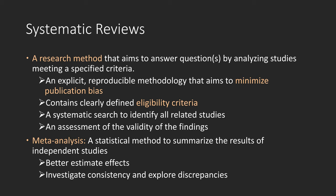A systematic review should contain a clearly stated set of objectives with clearly defined eligibility criteria. When doing a systematic review, use a systematic search to identify all relevant studies and also conduct an assessment of the validity of the findings.